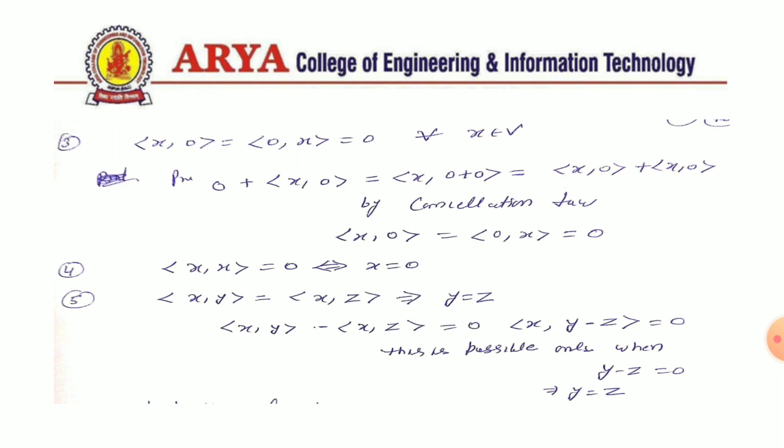The last property is: if inner product of (X, Y) equals inner product of (X, Z) for all X, then Y equals Z. We can prove it by noting that inner product of (X, Y) minus inner product of (X, Z) equals 0. By applying the definition, we get inner product of (X, Y-Z) equals 0, which is possible only when Y minus Z equals 0, which implies Y equals Z.